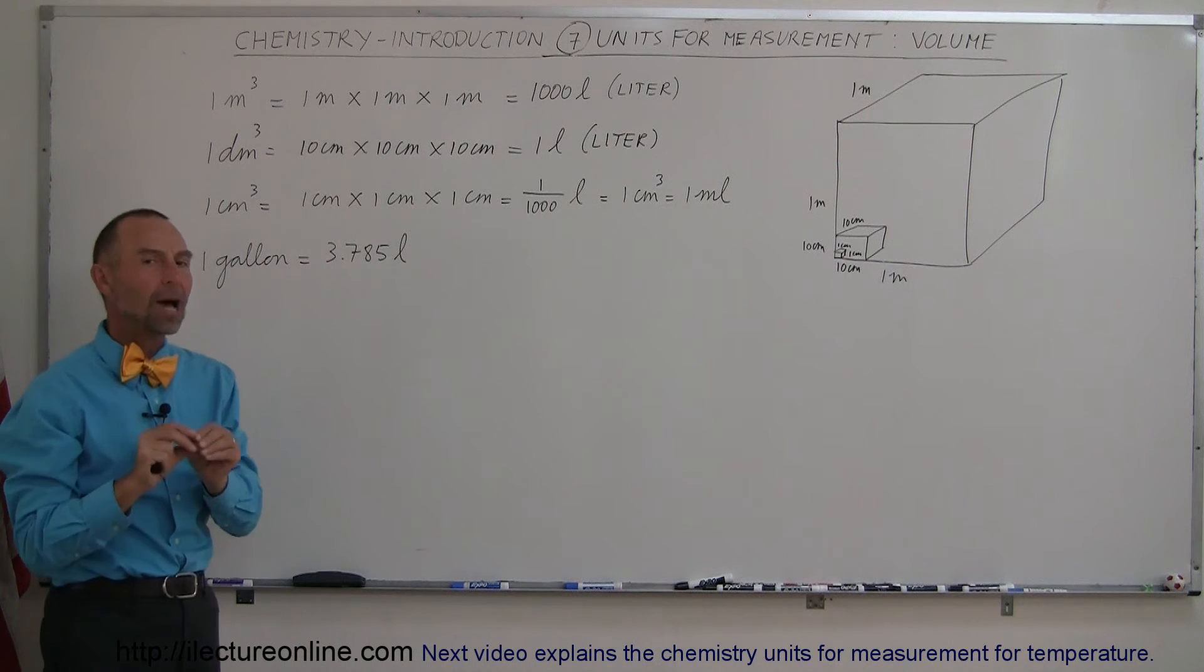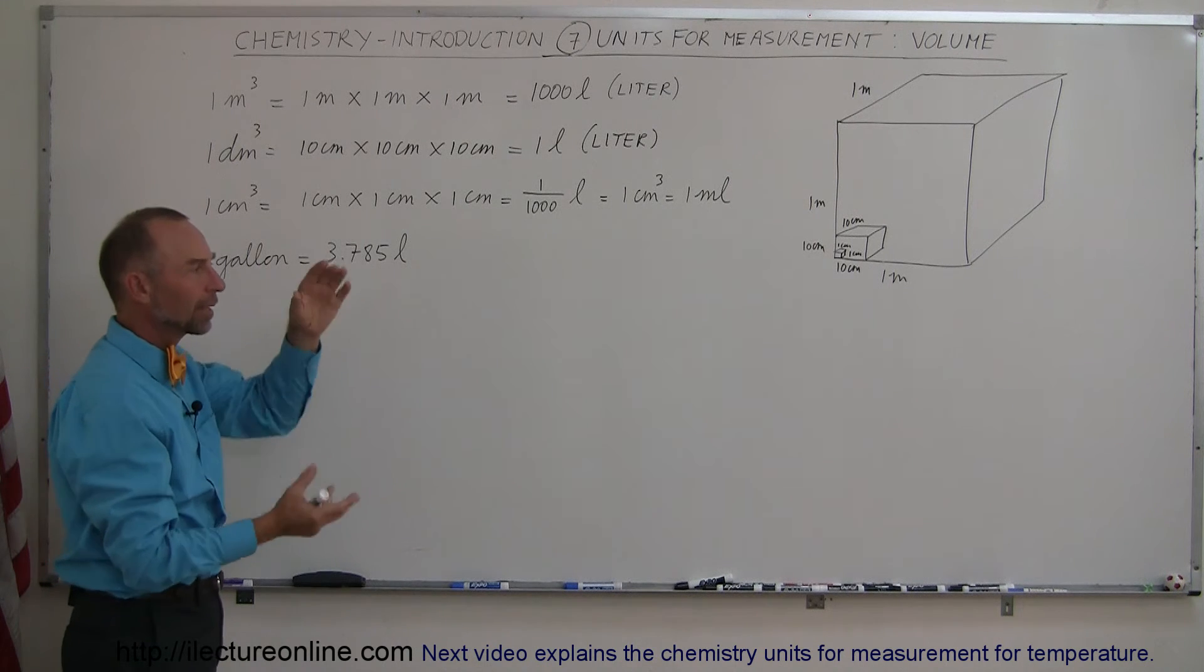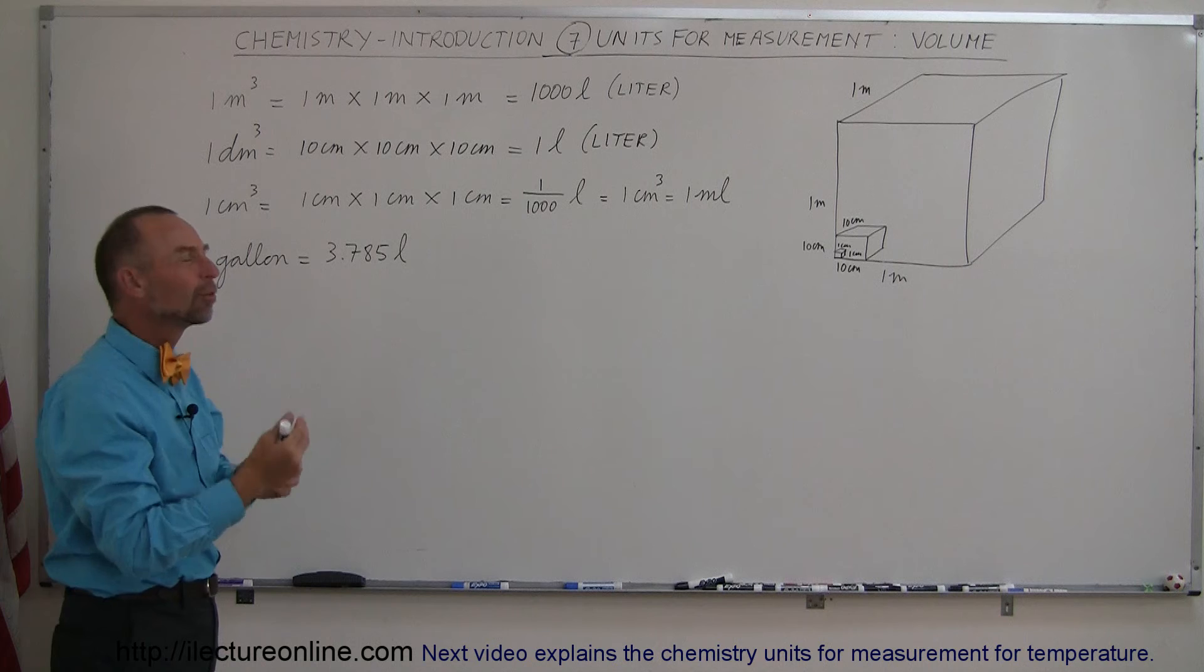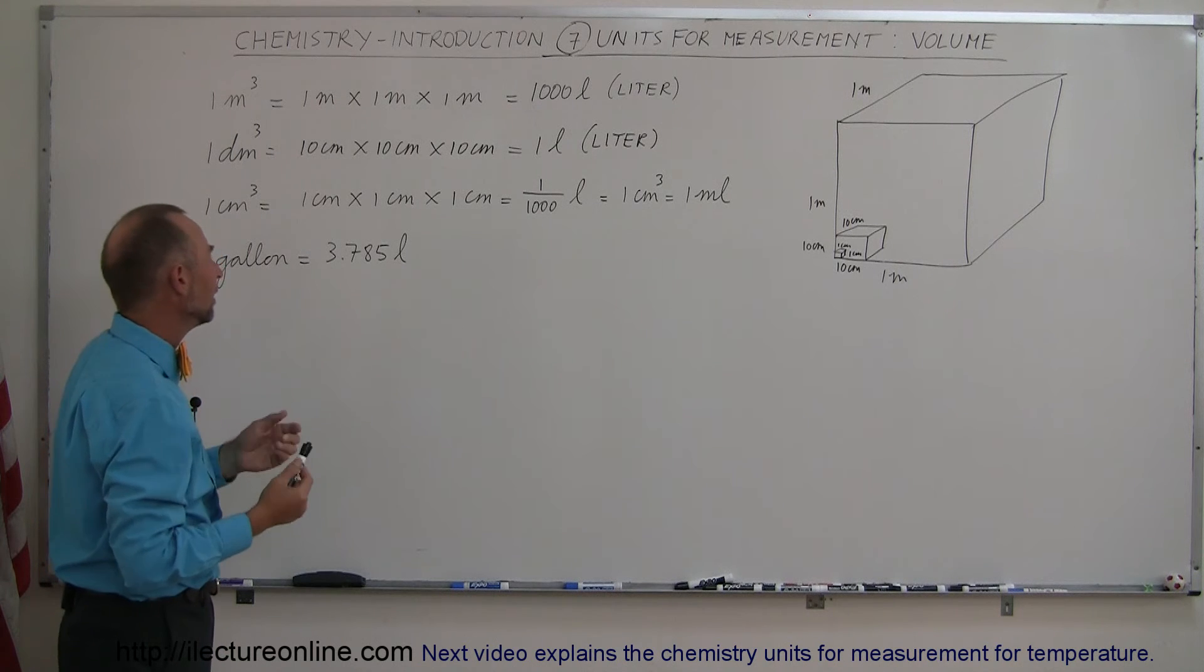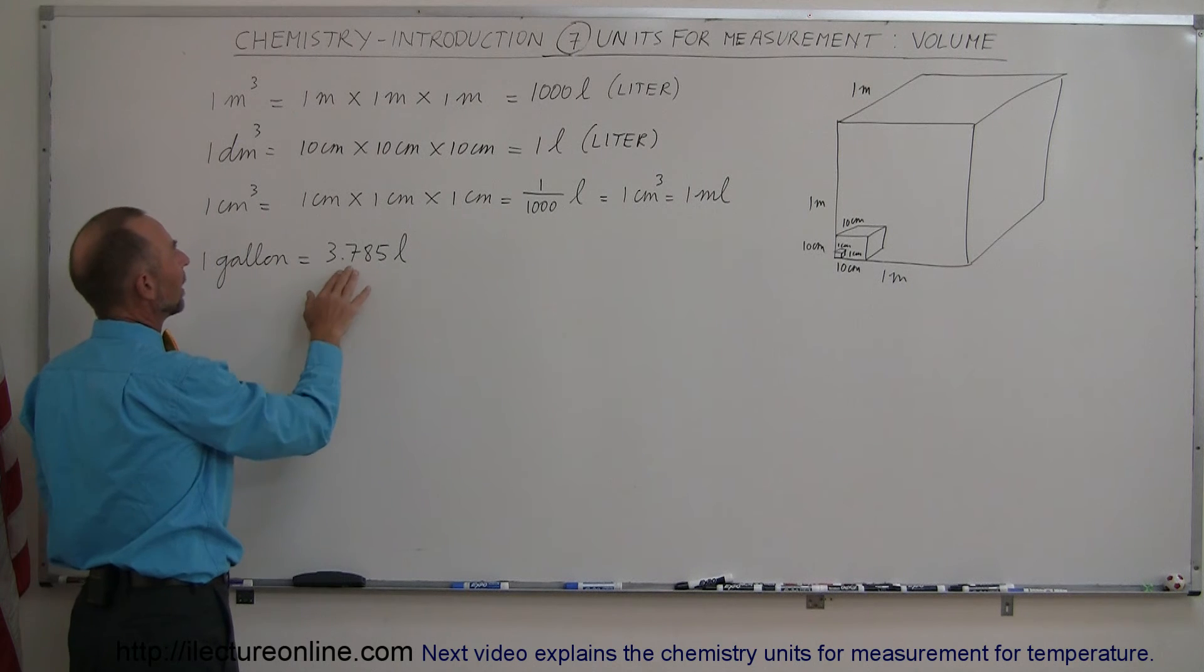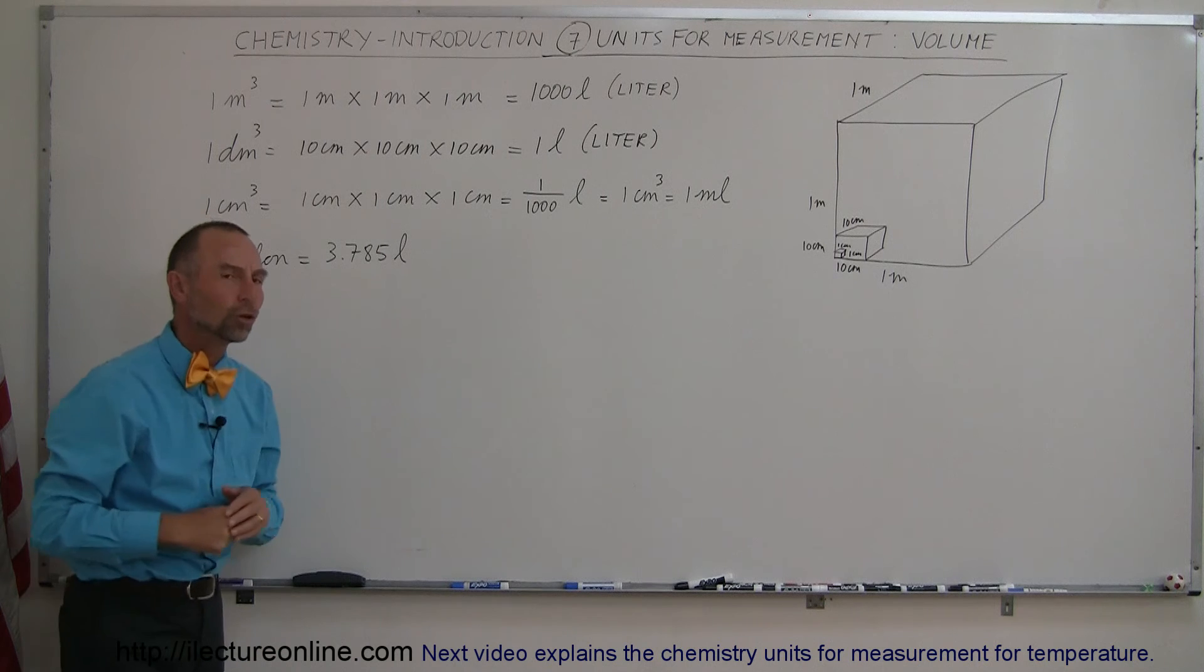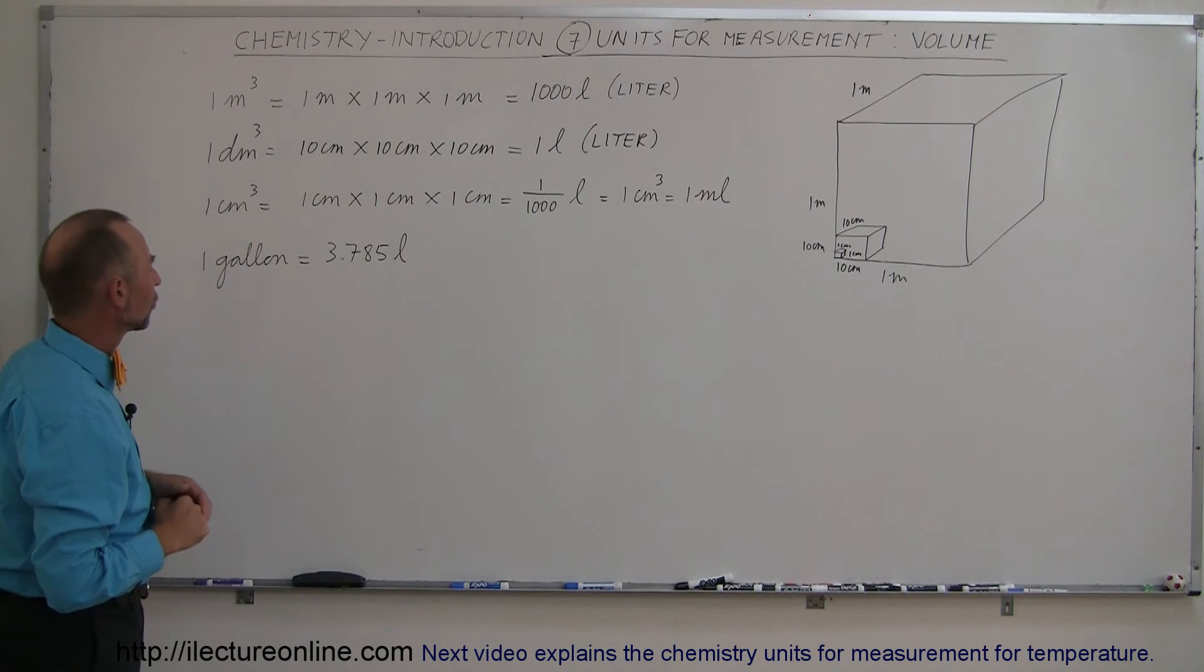So those are very common units in chemistry. Usually we deal with flasks, or burettes, or something like that, where we measure things in terms of cubic centimeters. And then, just in case, a gallon, definitely what we use here in the United States, is 3.785 liters to get that commonality between the English units and the metric units.